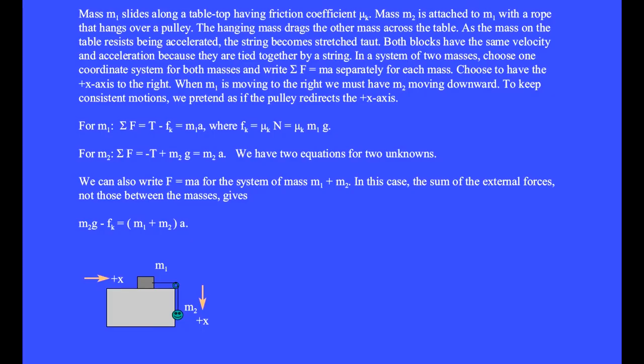Here is a free body diagram, although the mass is sliding in the opposite direction here. Mass m1 slides along a tabletop having friction coefficient mu k. Mass m2 is attached to m1 with a rope that hangs over a pulley.